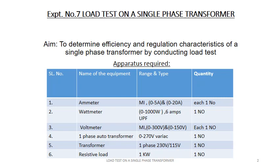How to find which is primary? In a single-phase voltage transformer, the primary is usually the side with the higher voltage. A transformer is defined as a passive electrical device that transfers electrical energy from one circuit to another circuit through the process of electromagnetic induction.